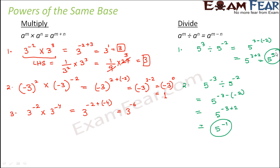In summary, whenever the bases are the same, if we are multiplying them the exponents are added, and if we are dividing them the exponents are subtracted.